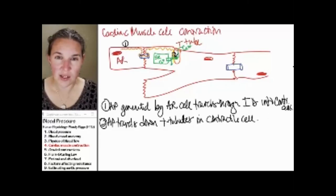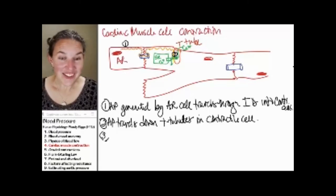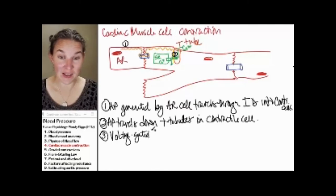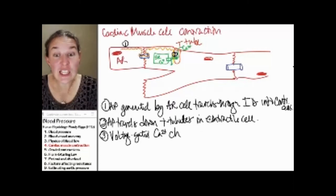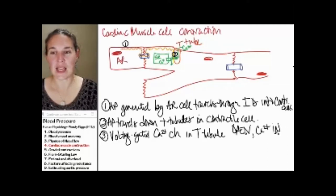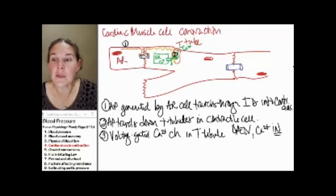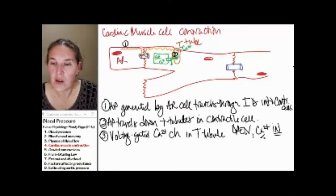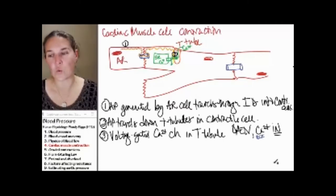Do you see how I've drawn the action potential traveling down? The action potential causes voltage-gated calcium channels in the T-tubule to open, and calcium comes in — it rushes in. Calcium from the extracellular fluid — that's where the calcium came from, and it comes rushing in.